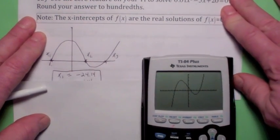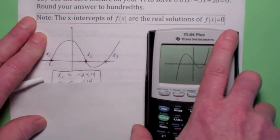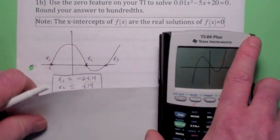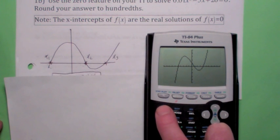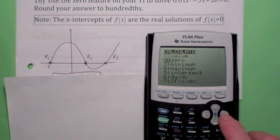Now that you've got it entered, we're going to use the 0 feature. This is how you do it. You go 2nd calc, then you hit 0, hit enter.